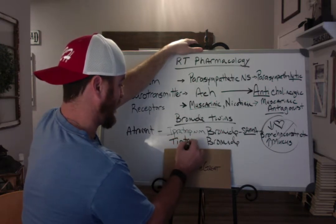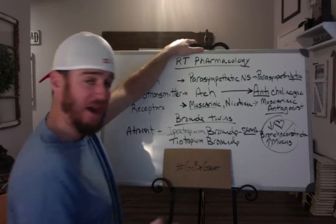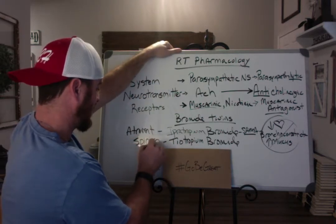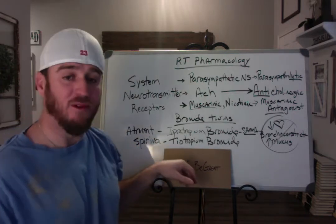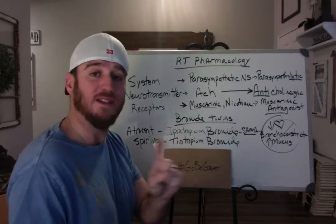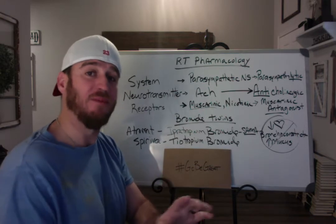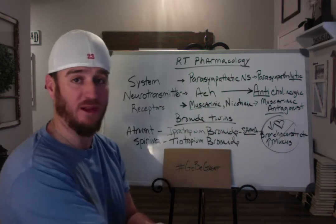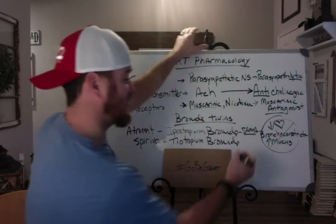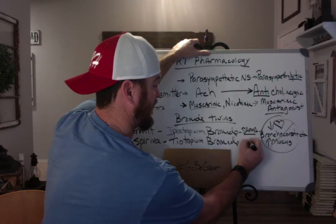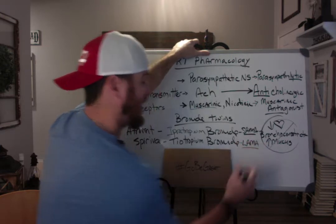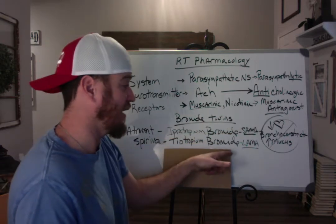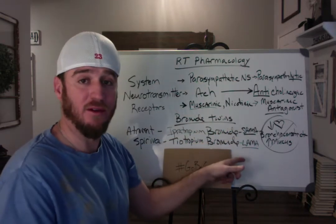The second one is tiotropium bromide. The brand name is Spiriva. This is available in DPI form and is a once-a-day drug — typically given in the morning and not again until the next morning — which makes it a long-acting muscarinic antagonist. So if classifying by SAMA and LAMA, ipratropium bromide is your SAMA and tiotropium bromide is your LAMA.